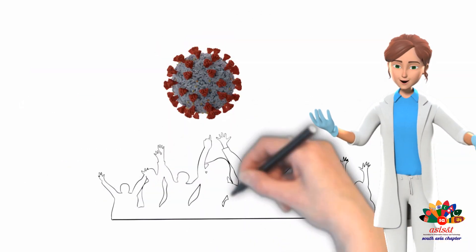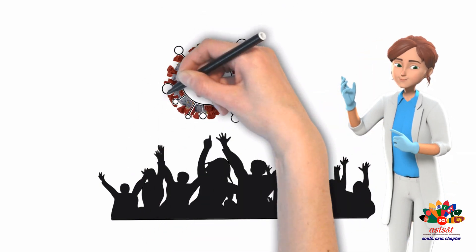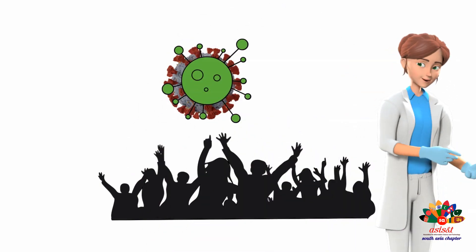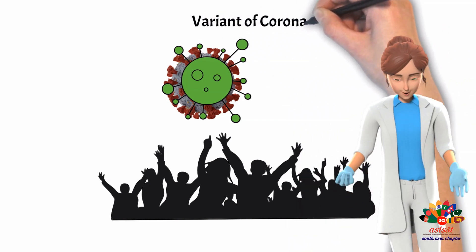Coronavirus evolves after spreading between people. Consequently, the virus changes and becomes different from the original virus. The changed virus is called the variant of coronavirus.